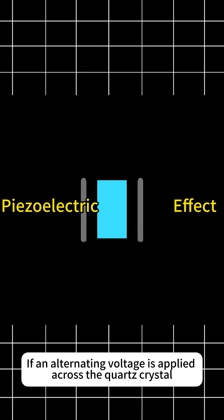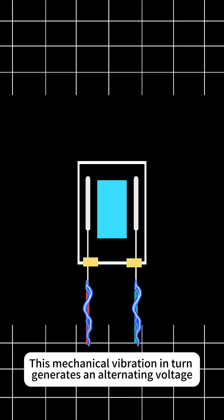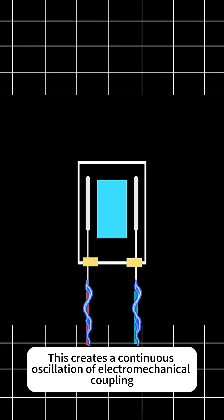Specifically, if an alternating voltage is applied across the quartz crystal, the crystal generates corresponding mechanical vibrations. This mechanical vibration in turn generates an alternating voltage, creating a continuous oscillation of electromechanical coupling.